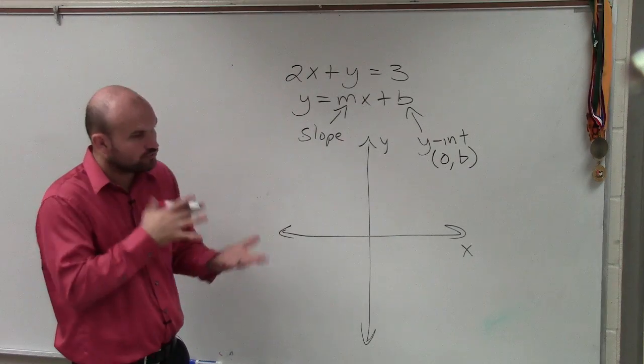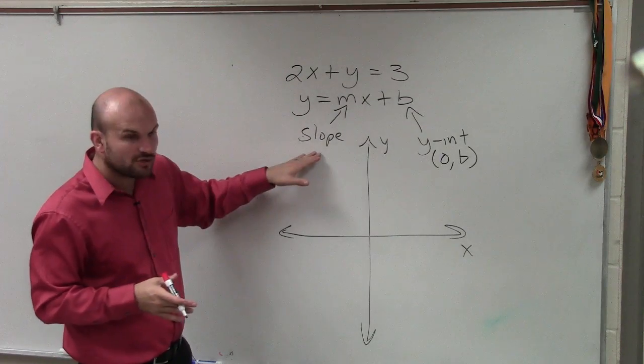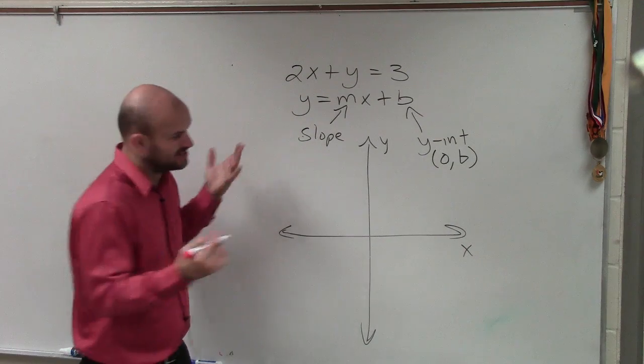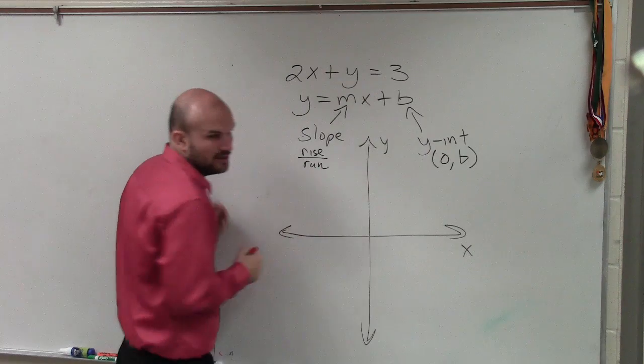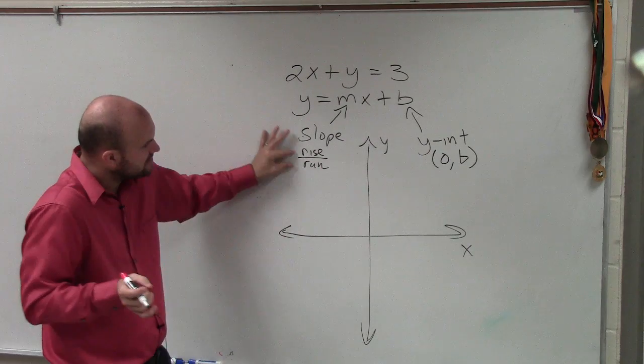The slope, remember, is the ratio between the change in y coordinates over the change in x-coordinates, which a lot of times people like to just simplify as rise over run. But it's really more than that. But it's important that slope is the ratio.